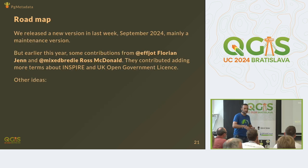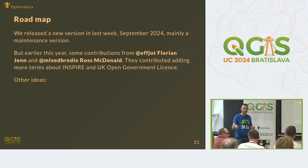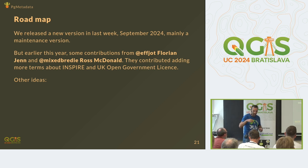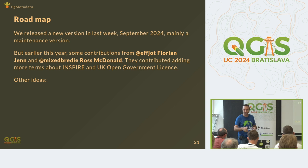We just released a version last week — mainly a maintenance release. But earlier this year we got contributions, and we really thank Florian Jenn and Ross McDonald. They contributed to PG Metadata by submitting pull requests on GitHub to provide more INSPIRE terms about contacts and roles, and also about a UK open government license. It's nice to know it's being used there — it's difficult to get feedback when we provide open source tools, as we don't always know our users.